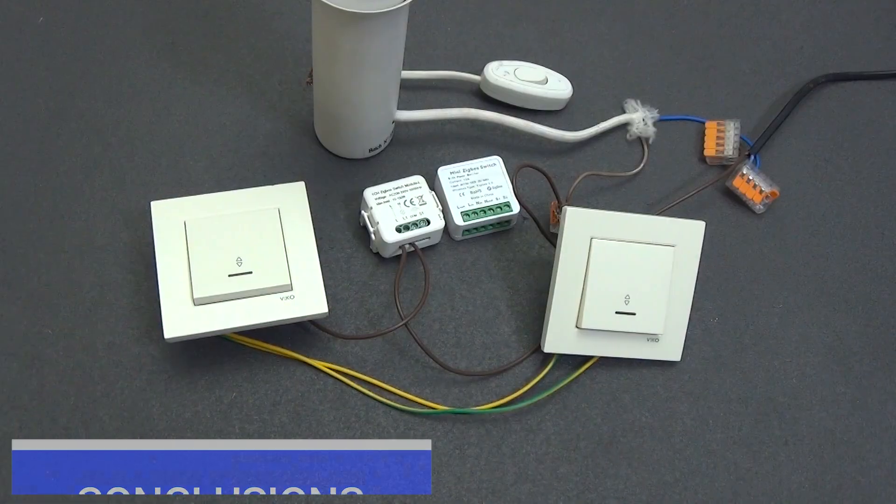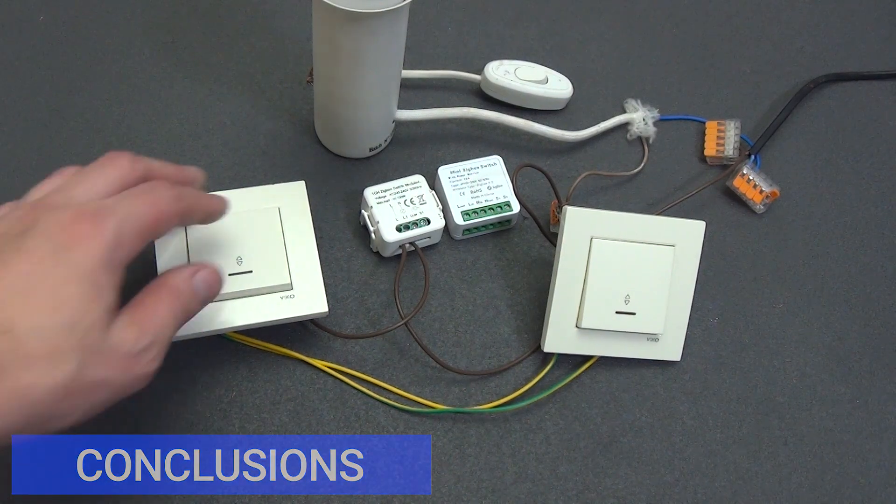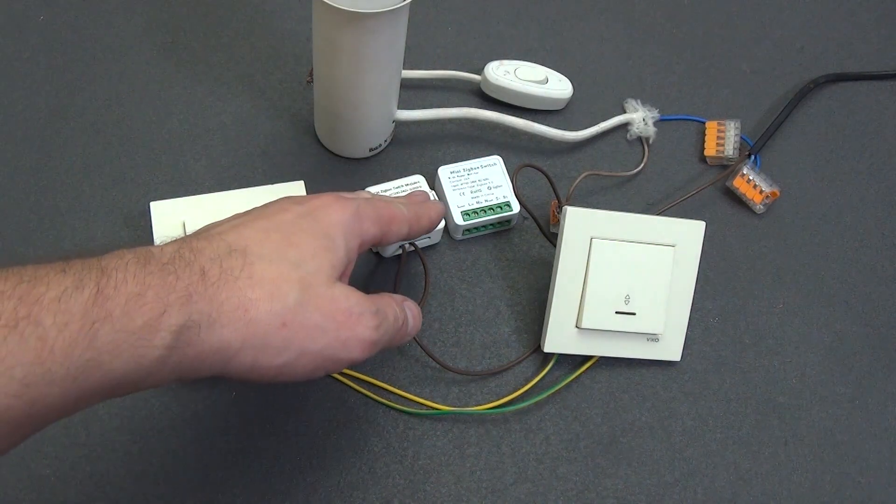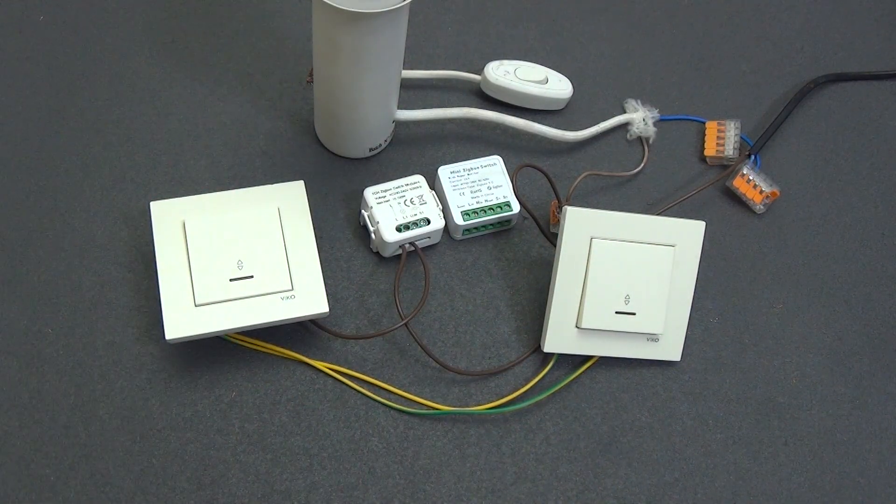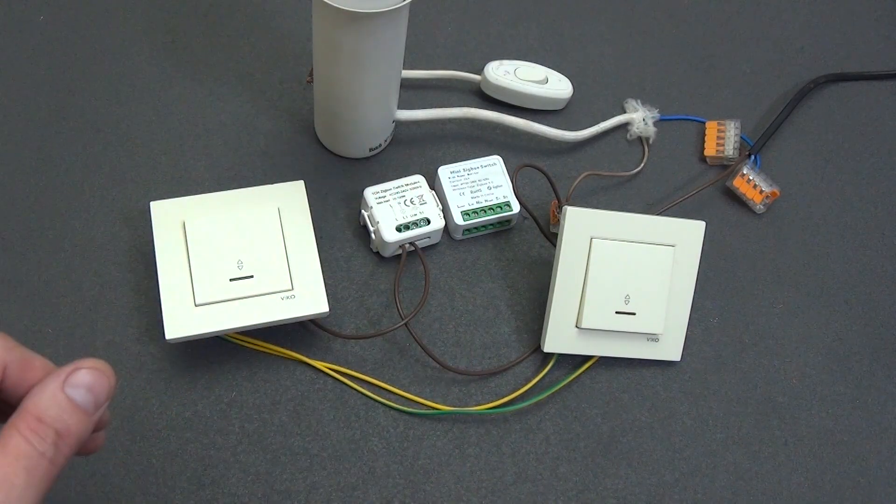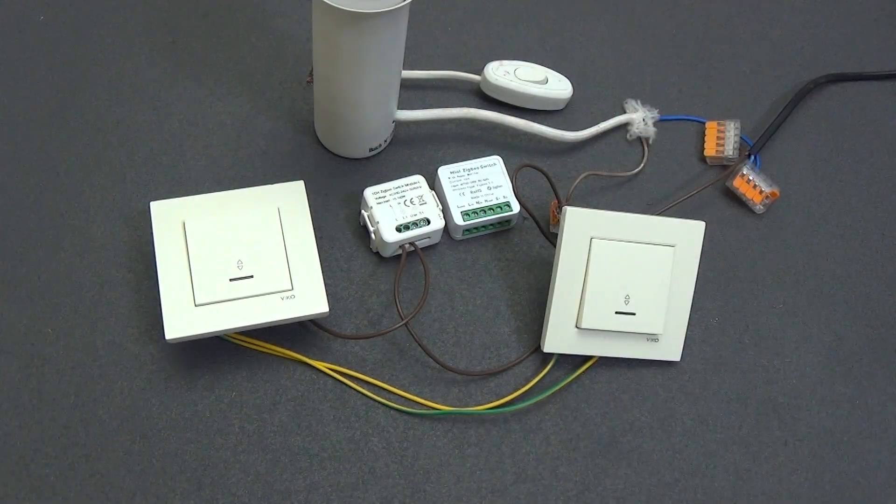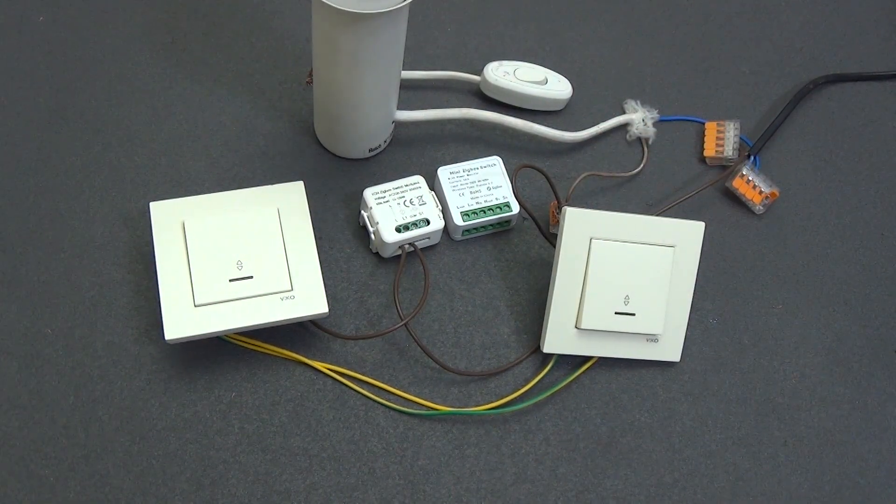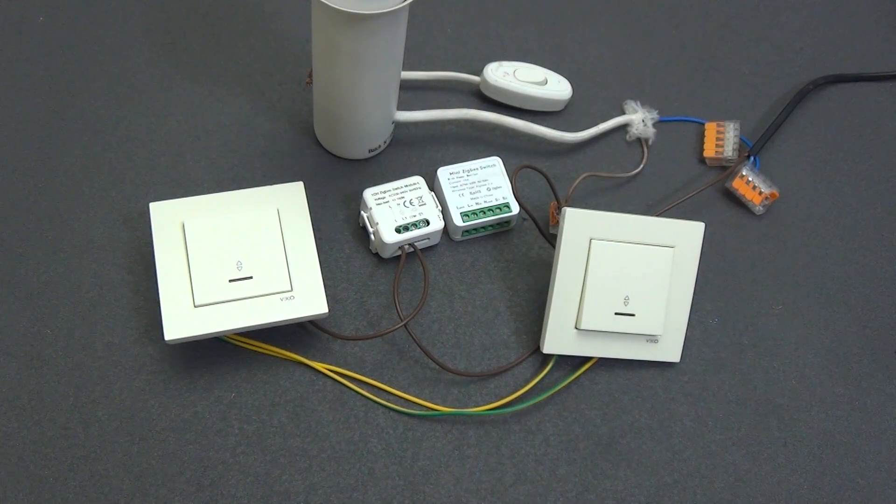To sum up. Today we thoroughly sorted out different variants of connecting pass-through switches to smart relays. We figured out the operating principle and the general wiring diagram of the pass-through switch. We looked at how the scheme works for a relay without neutral and with a neutral wire, how power is supplied, and how you can connect a relay so that everything works stably and without errors. Now you understand the principle and will be able to choose yourself which solution will suit you.